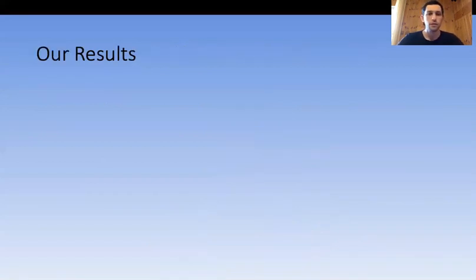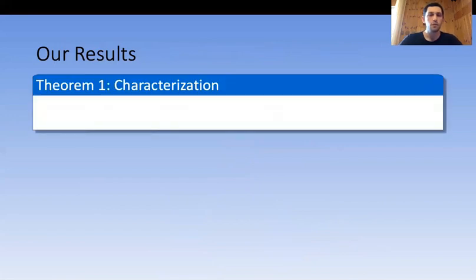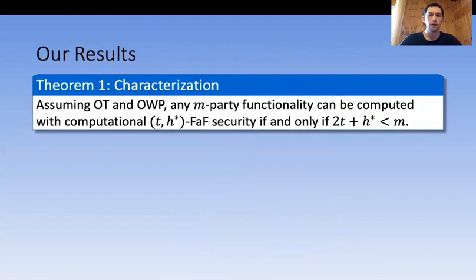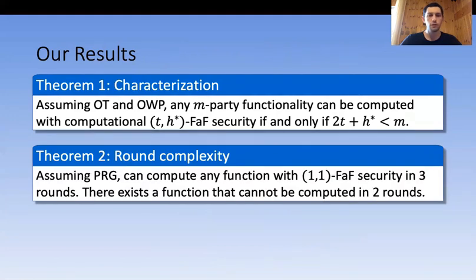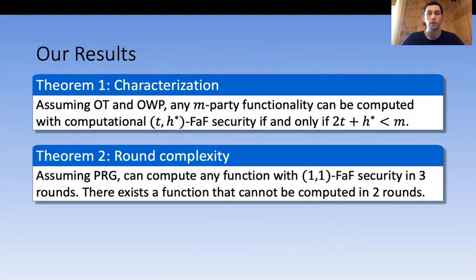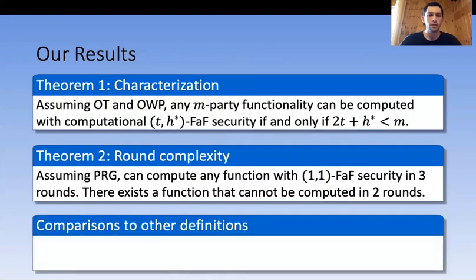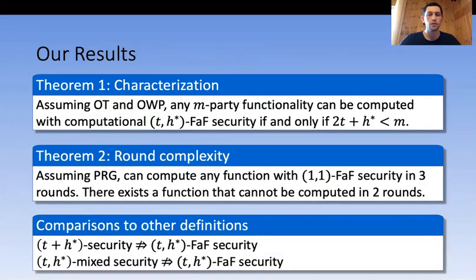We introduce several results regarding this new notion. First, we provide a characterization: under standard assumptions, any multi-party functionality can be computed with (T, H*)-FaF security if and only if 2T plus H* is strictly smaller than the number of parties. We also investigate round complexity, showing that assuming pseudo-random generators, any functionality can be computed with (1,1)-FaF security in three rounds. However, two rounds is already impossible even for (1,1)-FaF security, giving evidence as to why the Isha et al. protocol had honest parties reveal some information.